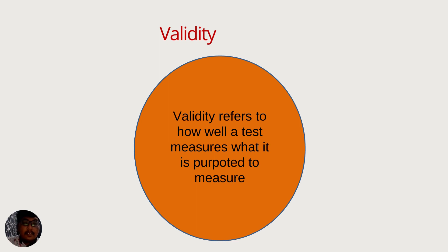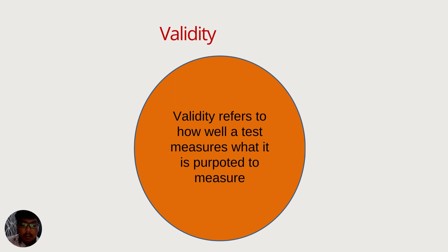The next principle is validity. Validity refers to how well a test measures what it is purported to measure. Validity is the most complex criterion of an effective test and arguably the most important principle. A valid test of reading ability should actually measure reading ability, not 20/20 vision, not previous knowledge of the subject, and not some other variable of questionable relevance. We may also be concerned with how well a test determines whether students have met an established set of goals or level of competence.